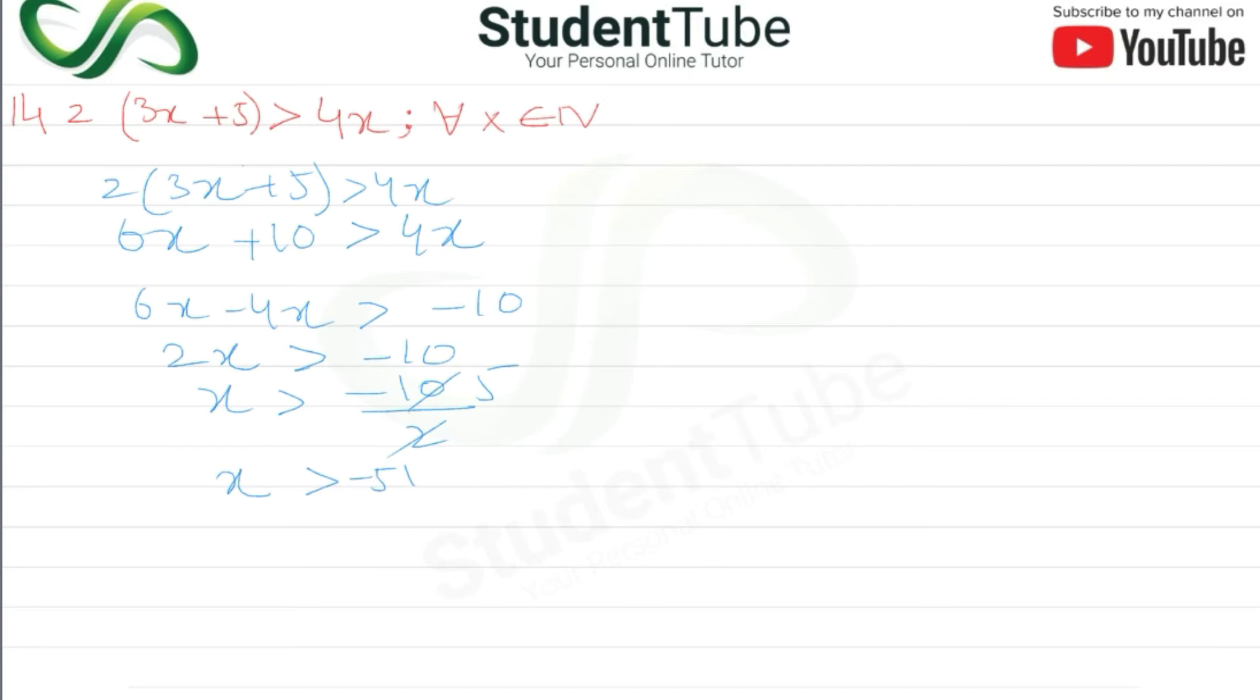So now x is greater than -5, meaning all values are greater than -5. Here is the number line: -4, -3, -2, -1, 0, 1, 2, 3, 4, 5 and so on.